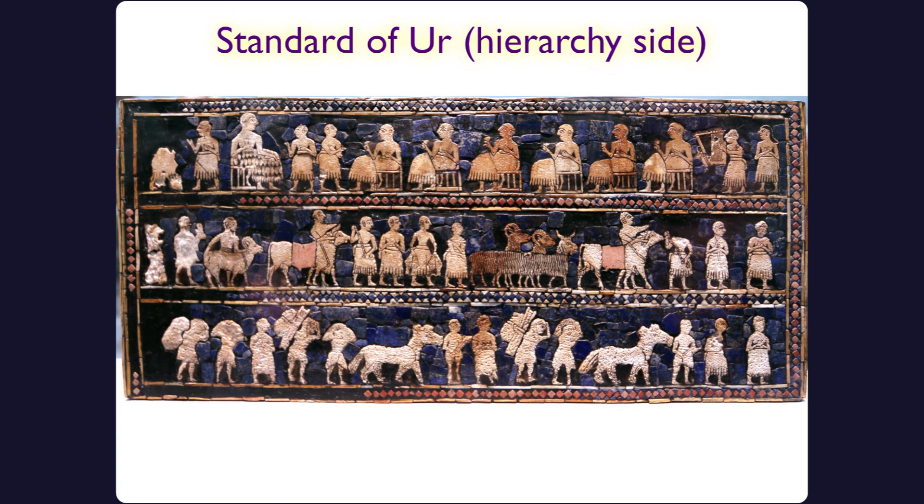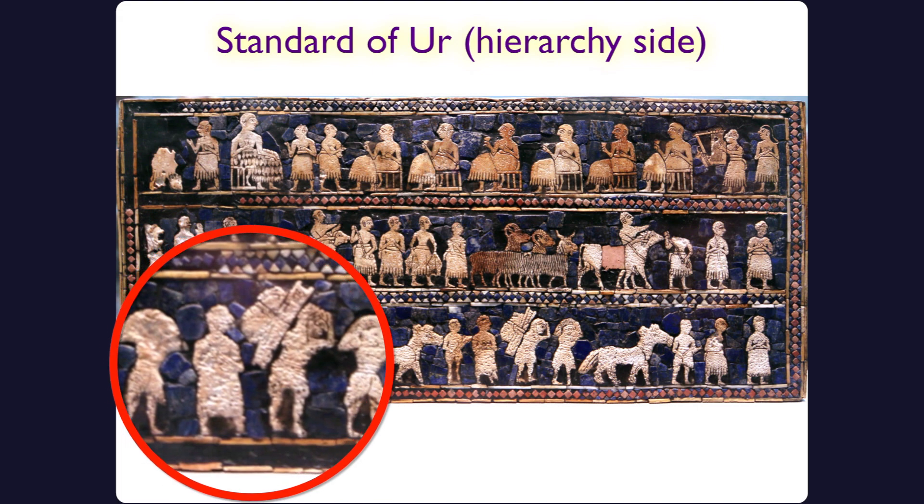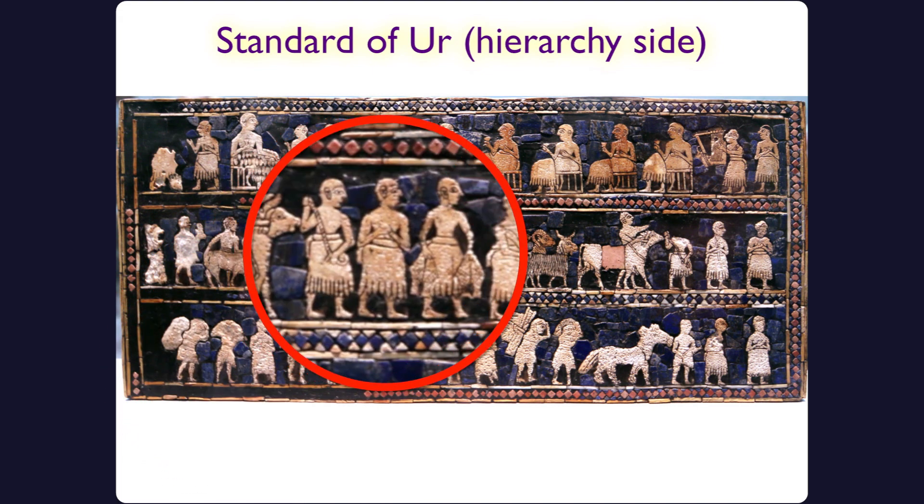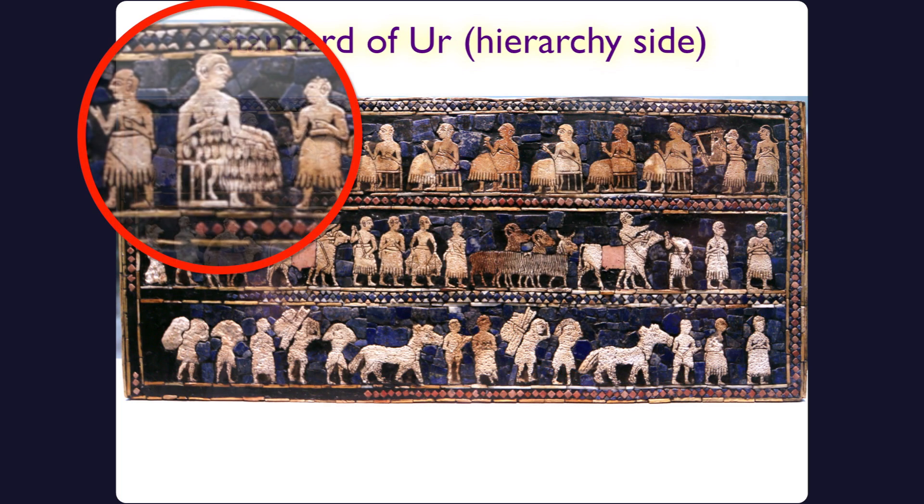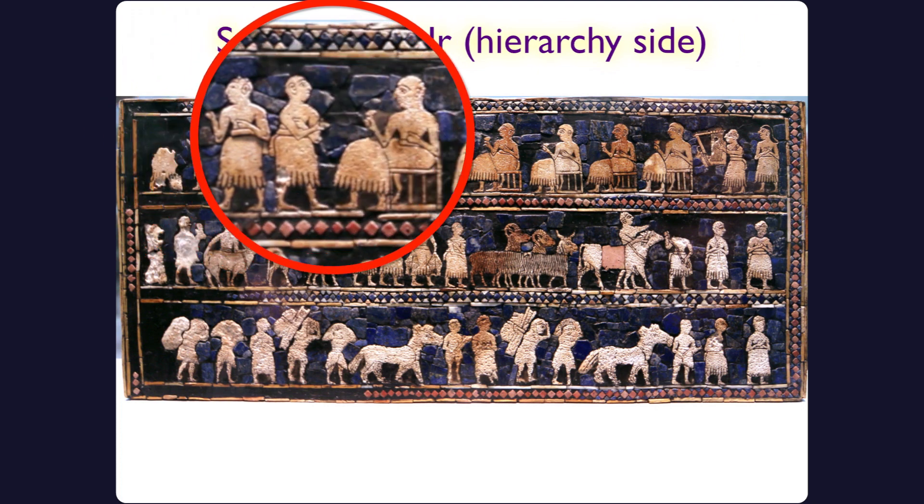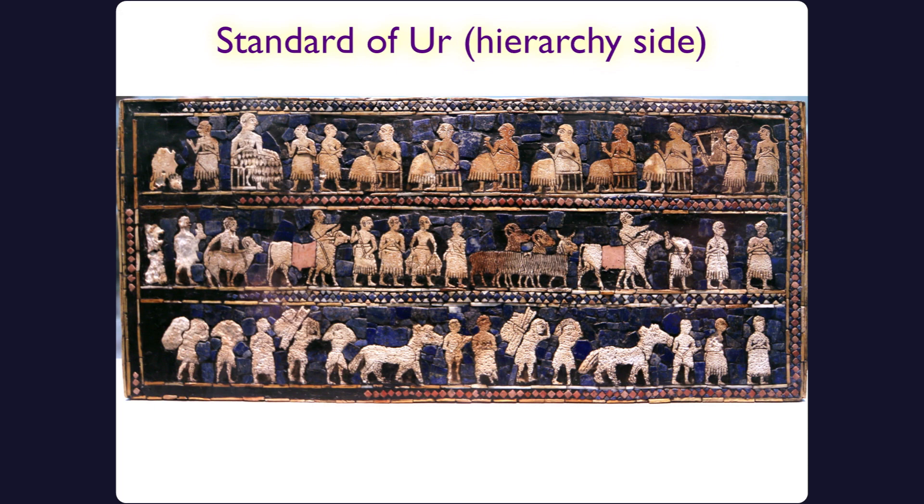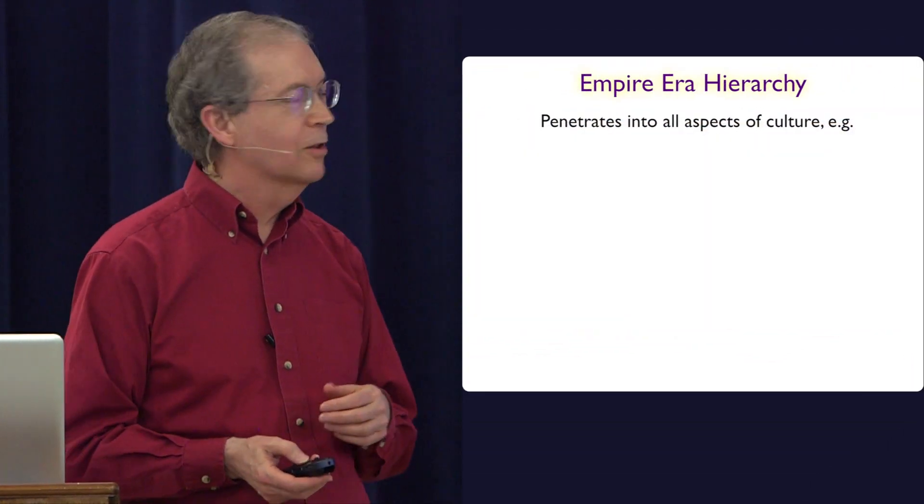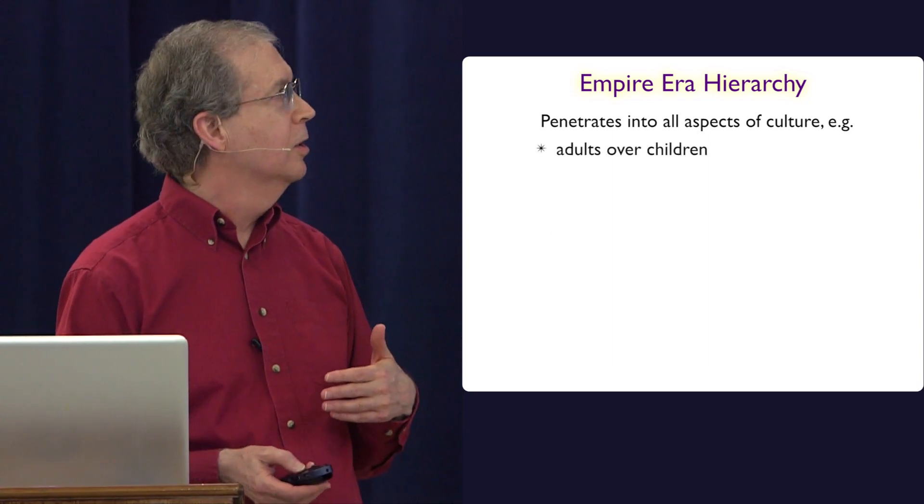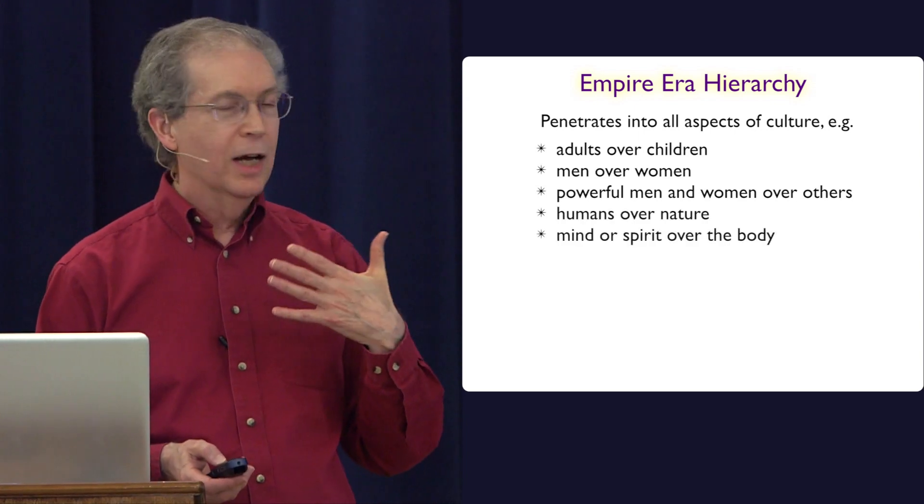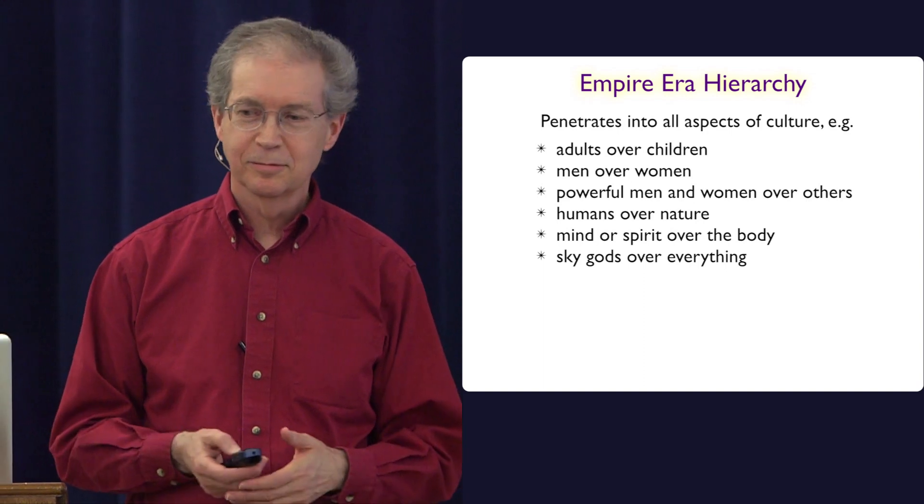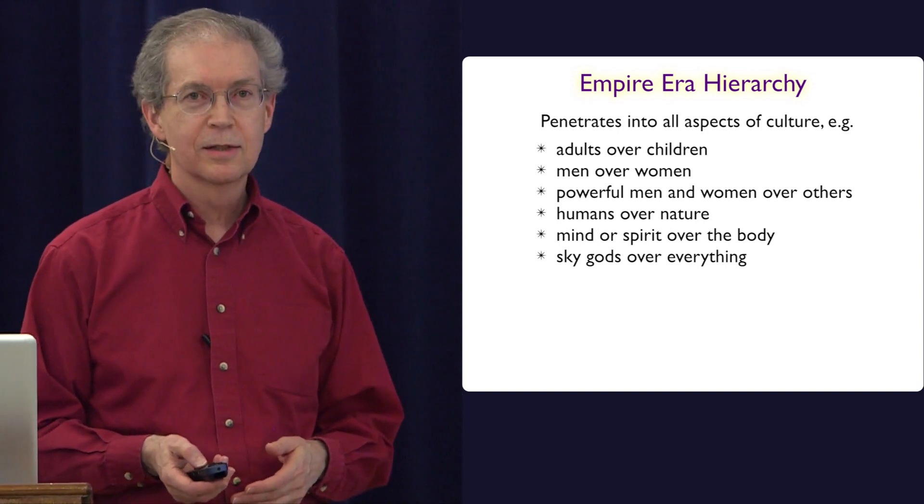The other side shows that you could call this, sometimes they call it the peace side. I won't quite call it the peace side. What you have down here are sort of faceless people carrying heavy loads of goods. Here you have a kind of middle range of people leading livestock. And up here you have the king again, breaking out through the top of the picture with various other figures seated and drinking. There's a very clear hierarchical class structure here. The empire era hierarchy, it penetrated into all aspects of culture. Adults over children, men over women, powerful men and women over others, humans over nature, mind and spirit over the body, and sky gods over everything. And it's a legacy that's still very powerfully with us.